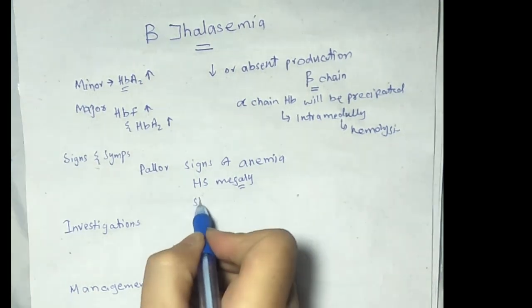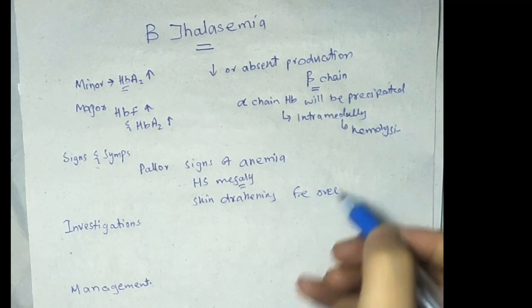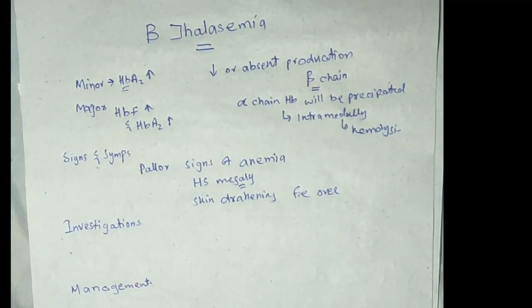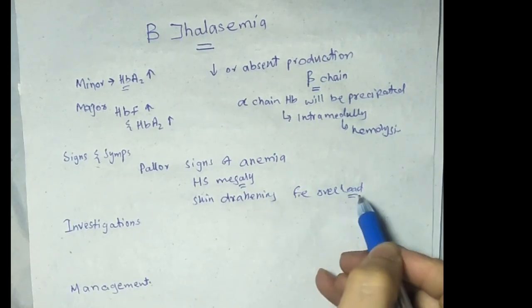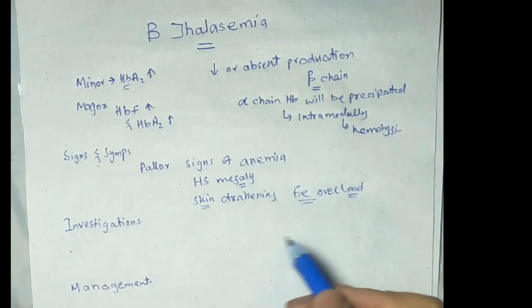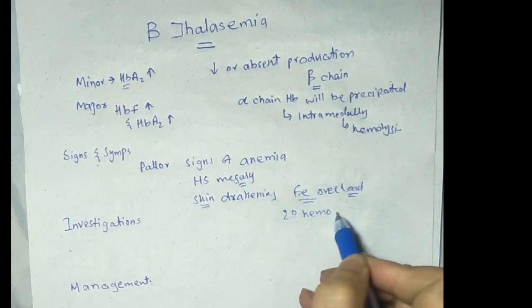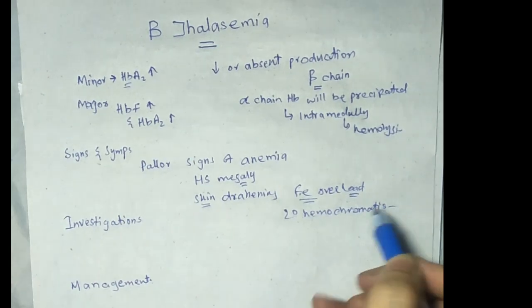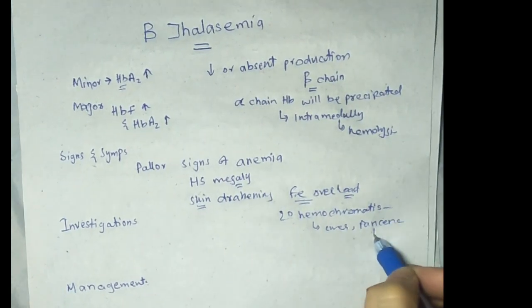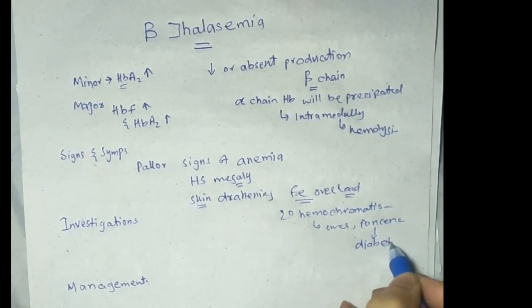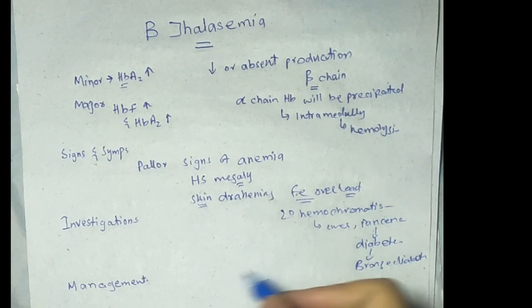There will also be skin darkening, which occurs due to iron overload. In beta thalassemia, patients have to receive frequent blood transfusions, which causes iron overload. Due to iron overload, there is skin darkening and a chance of secondary hemochromatosis, in which iron accumulates in various organs like the liver and pancreas. When iron accumulates in the pancreas, diabetes occurs, which is known as bronze diabetes.